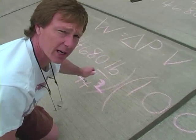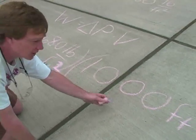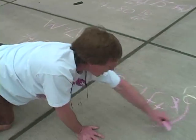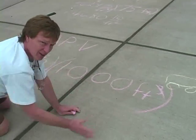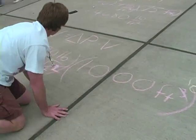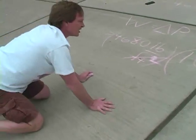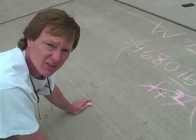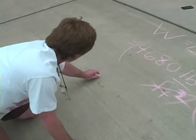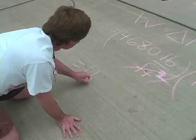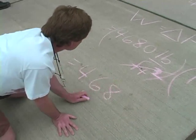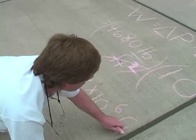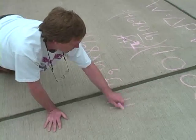So we have 4,680 pounds per square foot times 1,000 cubic feet. The square feet on the bottom cancel with part of the cubic feet on top, leaving one foot — giving us pounds times feet, or foot-pounds. That's energy. So the answer is 4,680,000 foot-pounds, which we write in scientific notation as 4.68 × 10⁶ foot-pounds.